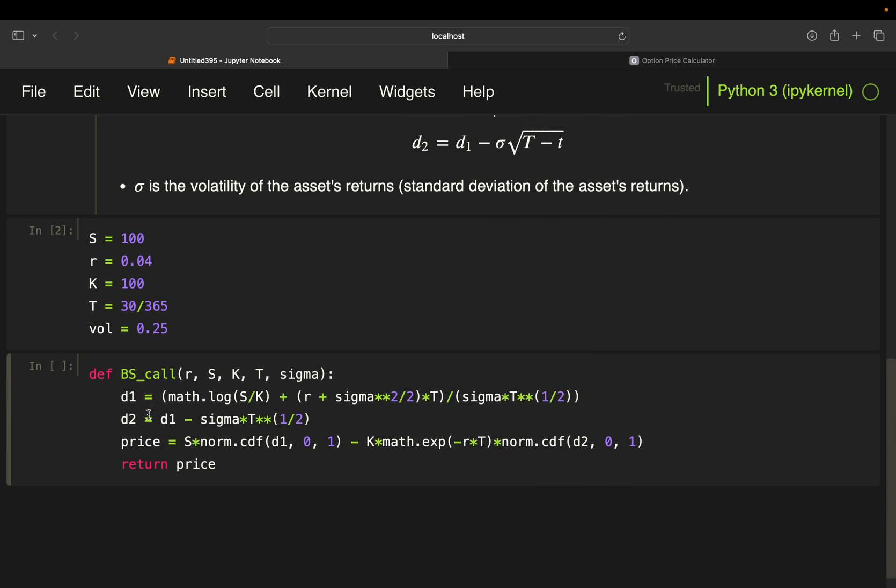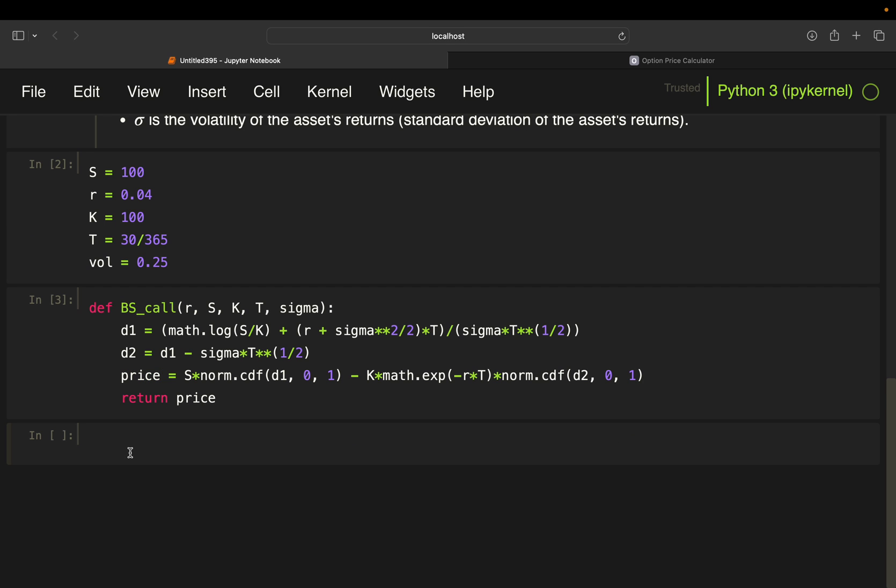Now, this is from the last video, where we are calculating a Black Scholes call option. So, if I would call that option here,